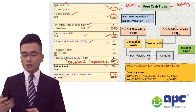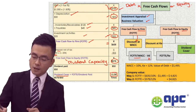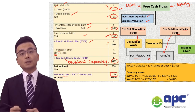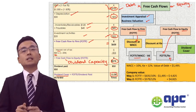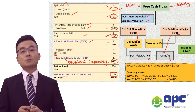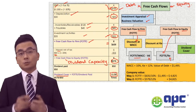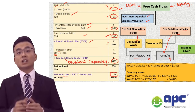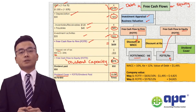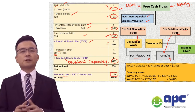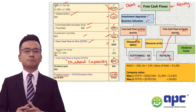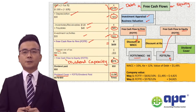Alternatively, if we start with free cash flows to equity as the numerator, we discount at the cost of equity — solely reflecting the payment to shareholders — to arrive directly at the value of equity, or the value of the business.